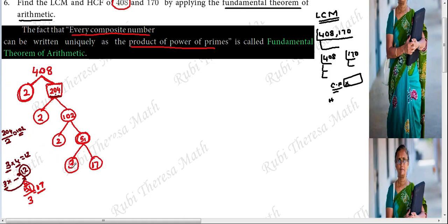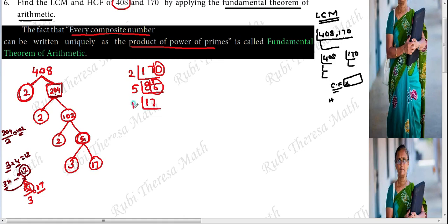We have obtained all the prime factors for 408. Stop — this is the factorization. At this point, 17 is prime. Now for 170: the first prime factor we can choose is 2. 2 into 85 is 170. 5 into 17 is 85. 17 is prime. So 408 equals 2 × 2 × 2 × 3 × 17, and 170 equals 2 × 5 × 17.